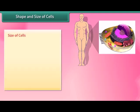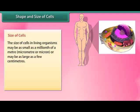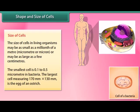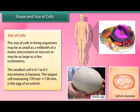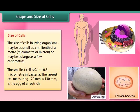The size of cells in living organisms may be as small as a millionth of a meter, known as a micrometer or micron, or may be as large as a few centimeters. The smallest cell is 0.1 to 0.5 micrometers in bacteria. The largest cell, measuring 170 mm by 130 mm, is the egg of an ostrich.